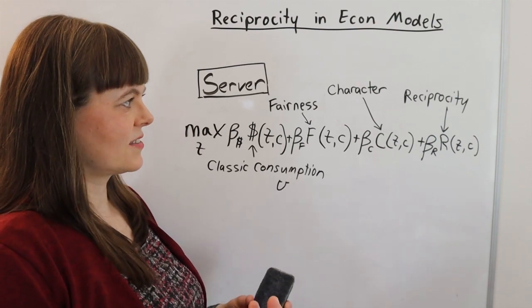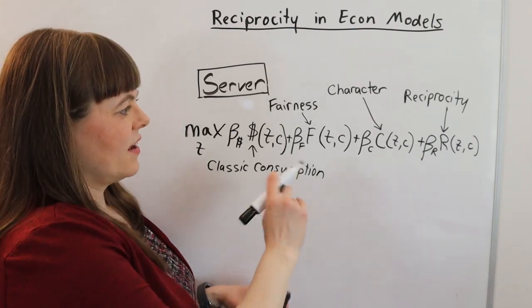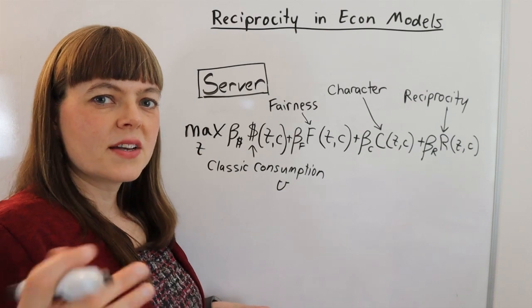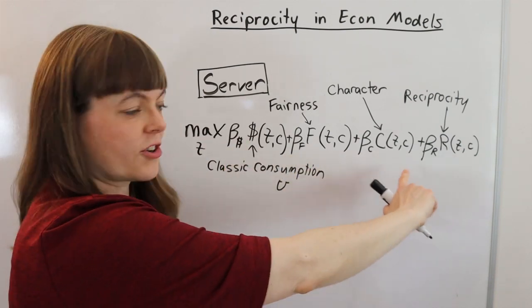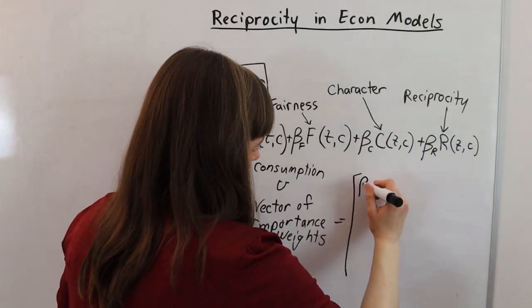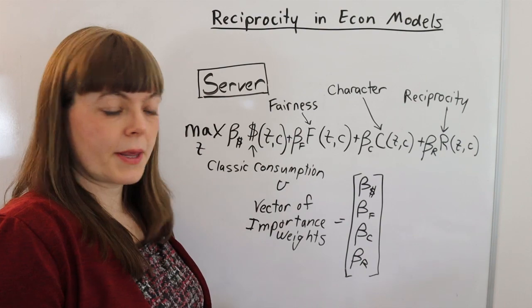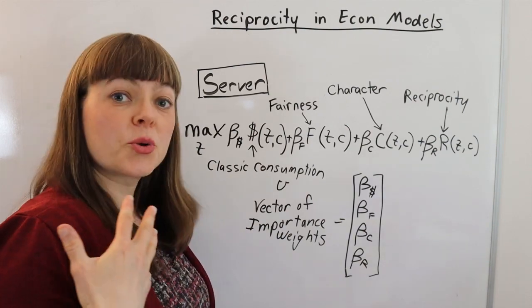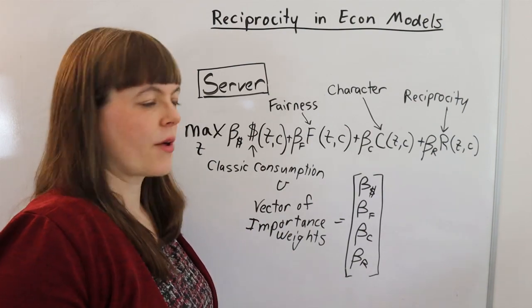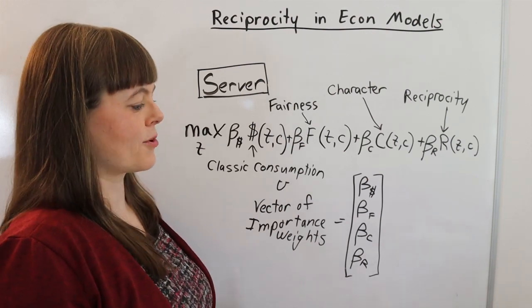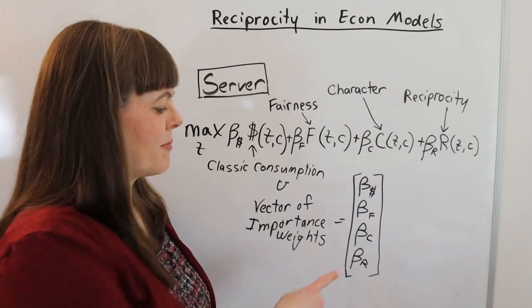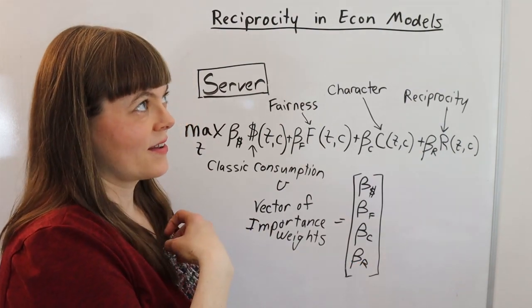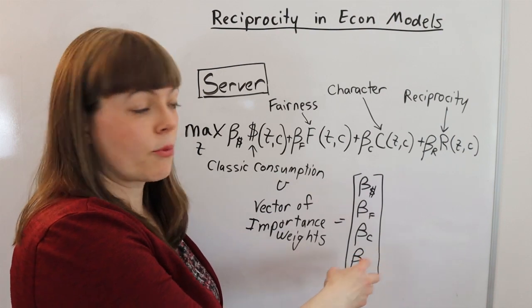Now, we might imagine a person's personality or character is going to have certain importance weights that they place on these four terms relatively. So you could write out a vector of importance weights that captures that. And you can imagine different people with different weights. For some people, they have a strong sense of reciprocity and people who know them well are kind of careful around those people because they know they'll get a lot of favors if they're nice to that person, but they're going to be in the doghouse if they're mean to that person. You can definitely imagine evolutionary reasons why some people might have a strong instinctive reaction to have a heavy importance weight on reciprocity.